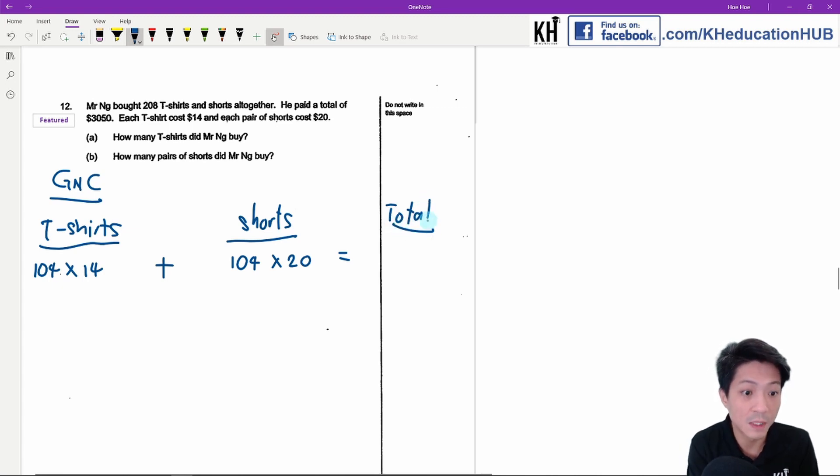Since this is a paper two, you can use a calculator, and if you can use a calculator, you should be able to get the answer pretty quickly. In this case, the total will be $3,536, which is wrong.